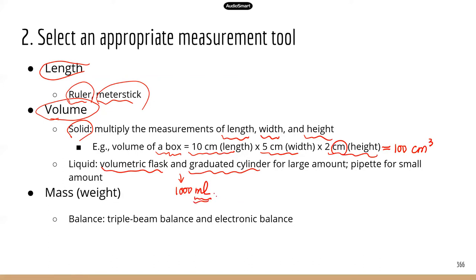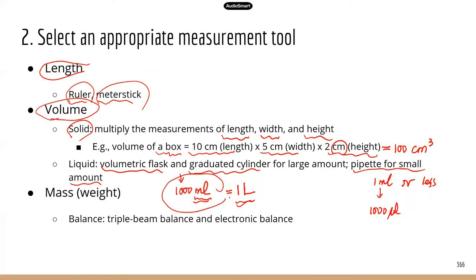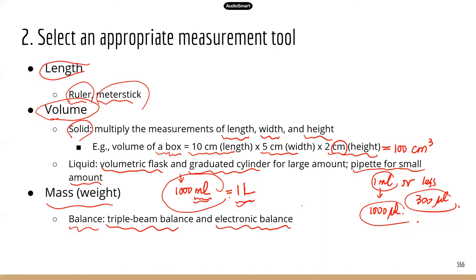We usually just call this mil. 1,000 mils equals one liter, which is approximately one-third of a gallon. We use a pipette for smaller amounts of liquid — say one mil or less. One mil equals 1,000 microliters. To measure mass or weight, we use balances. ATI mentions two types: triple beam balance and electronic balance. The electronic balance is the one most commonly used in the lab; the triple beam balance is old-fashioned.